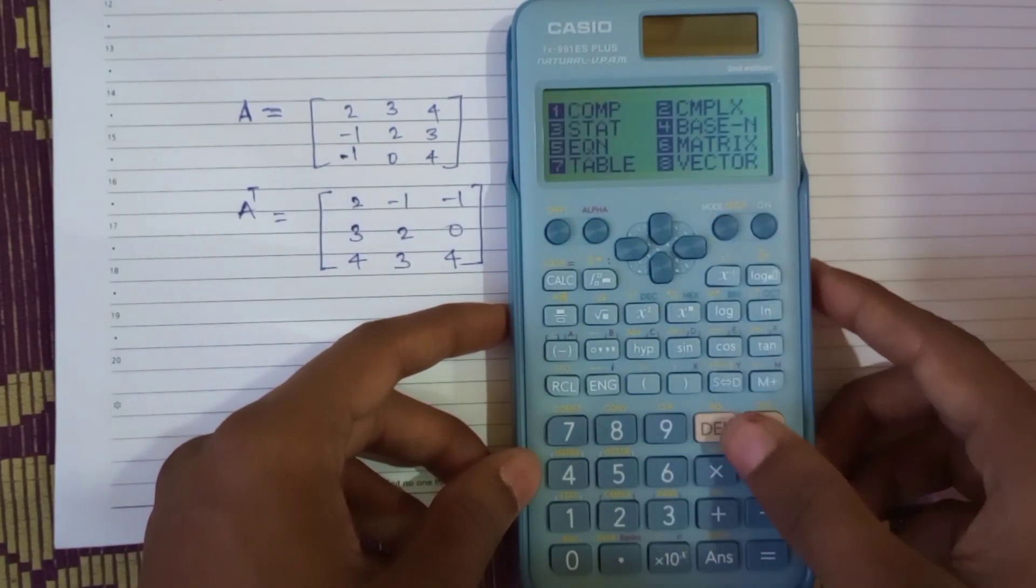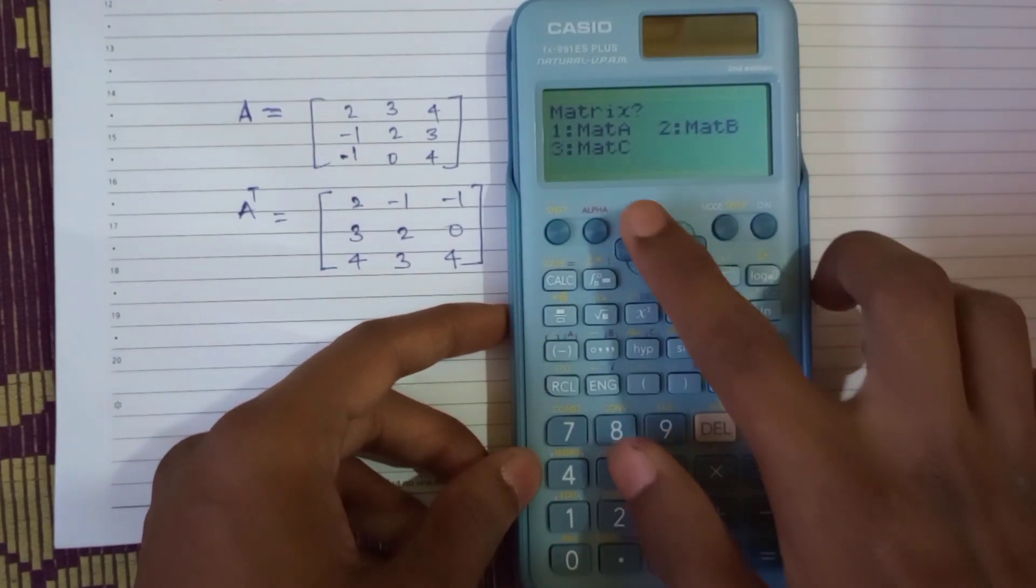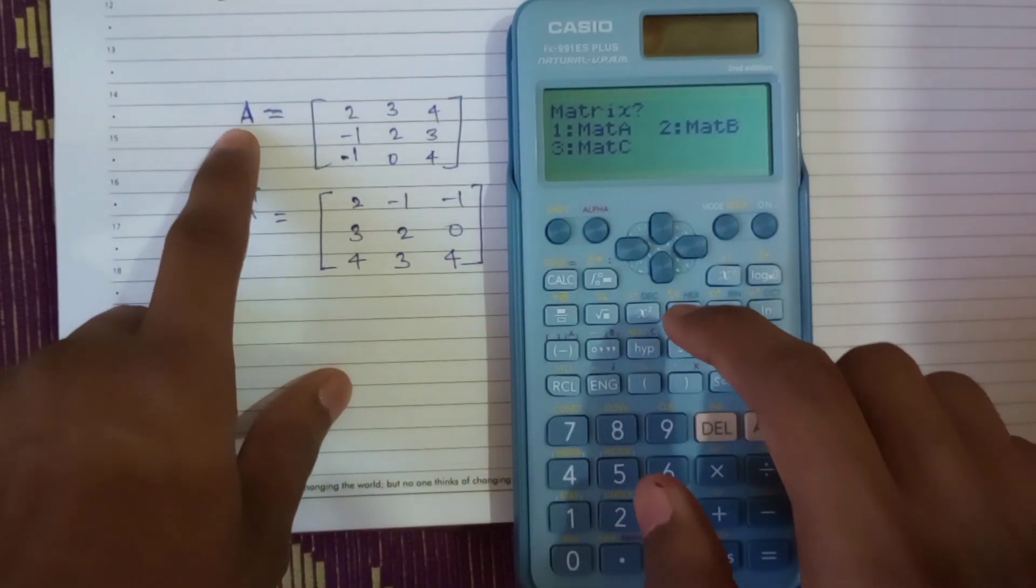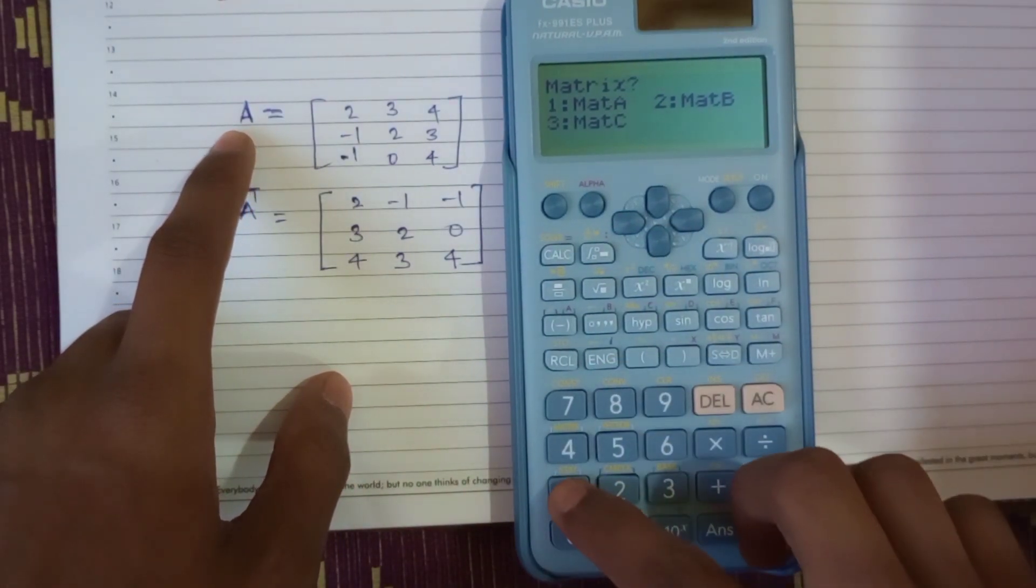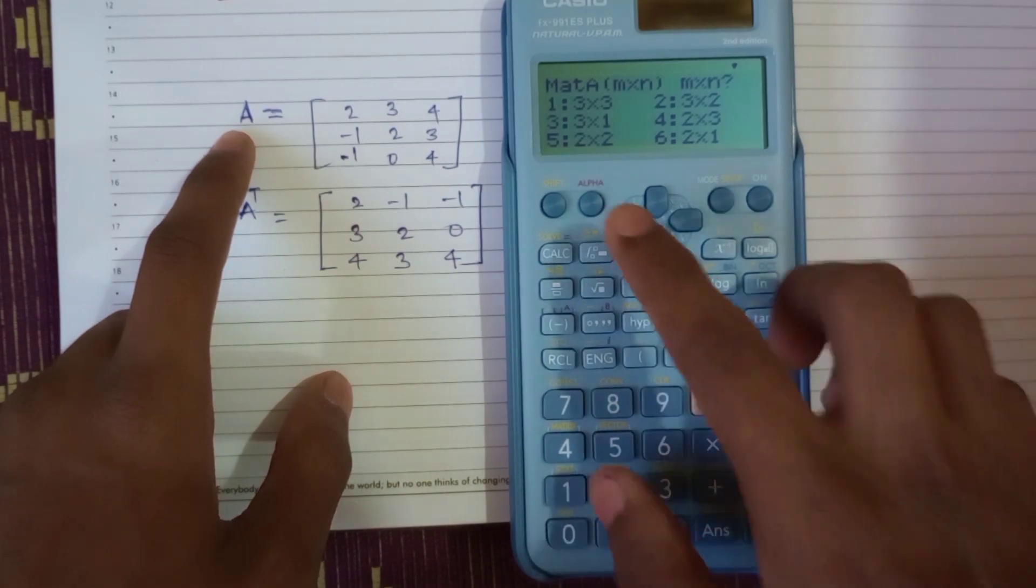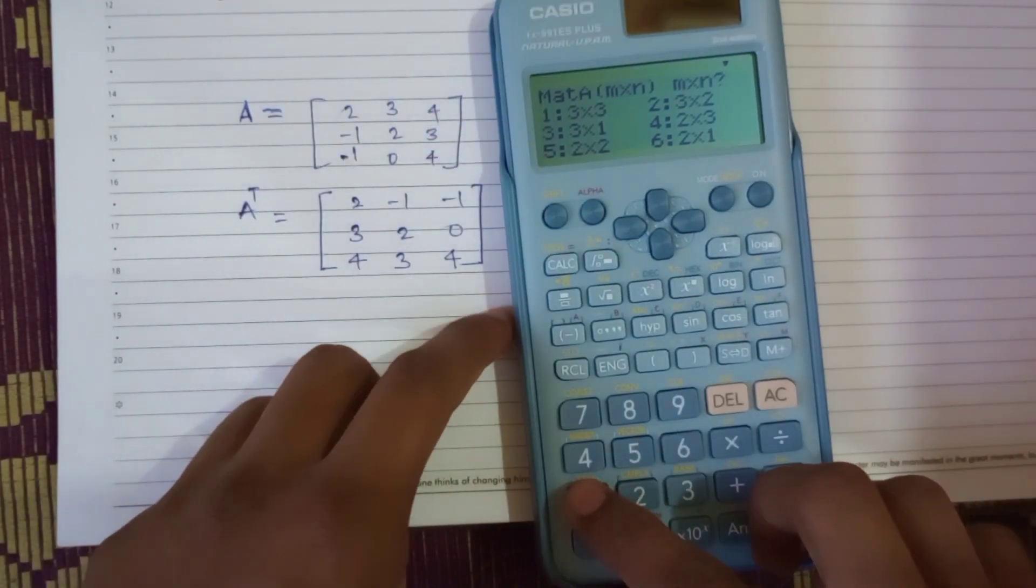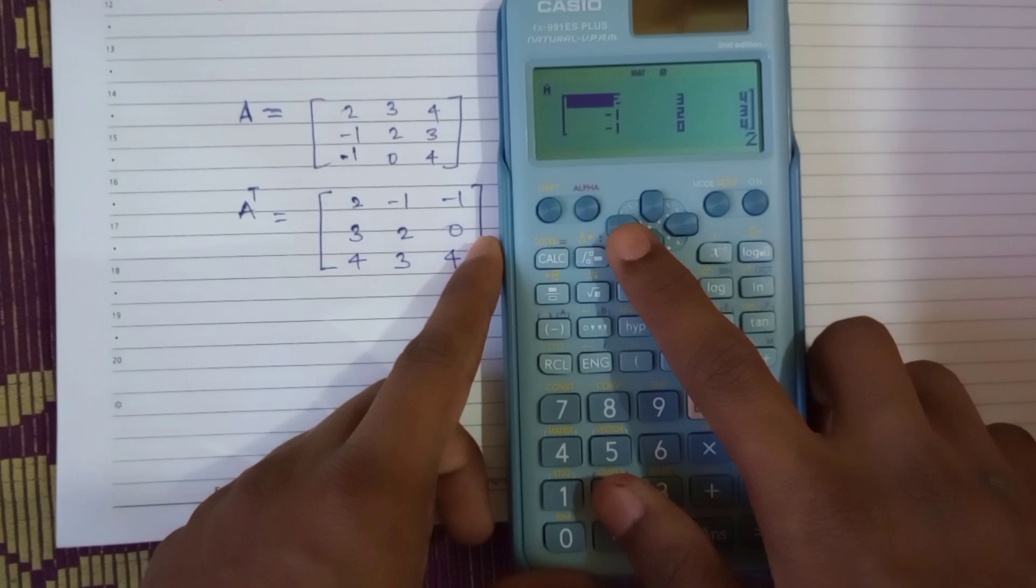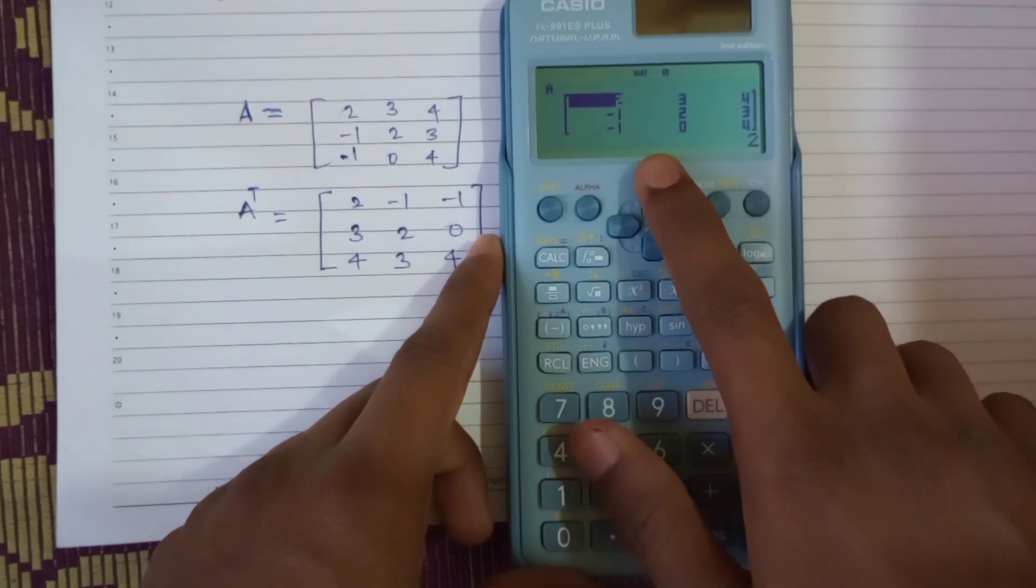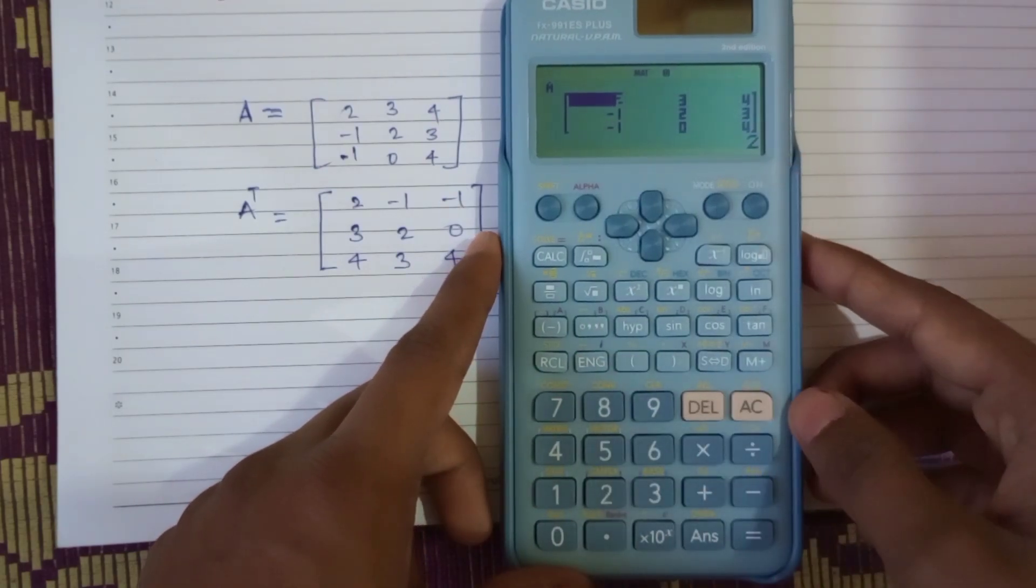Set it in matrix mode, that is 6, and choose the matrix you want to fill, that is A. I will choose A, that is 1, okay. Now it's a 3x3 matrix, that's 1, that is 3x3 matrix. Here it is. I have inputted all the values earlier than this.